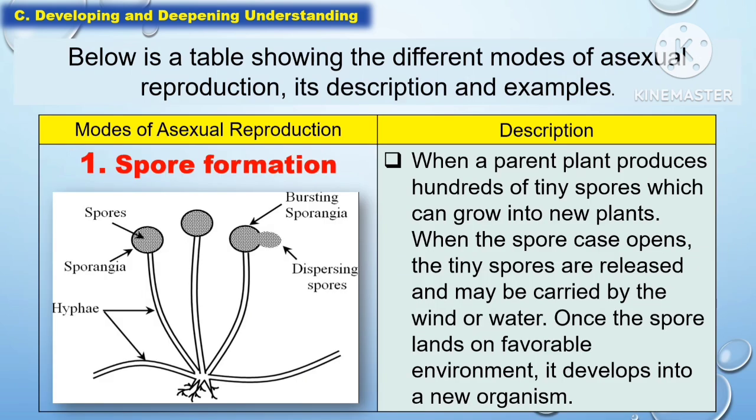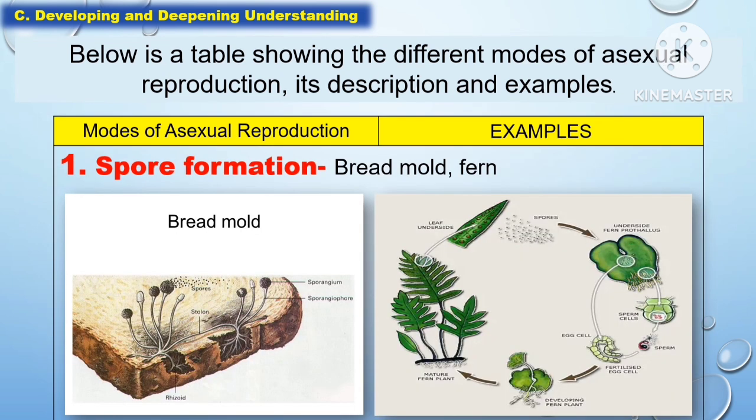Below are the tables showing the different modes of asexual reproduction. The first one is spore formation, when a parent plant produces hundreds of tiny spores which can grow into new plants. When the spore case opens, the tiny spores are released and may be carried by the wind or water. Once the spore lands on a favorable environment, it develops into a new organism. Examples for this are bread mold and fern.